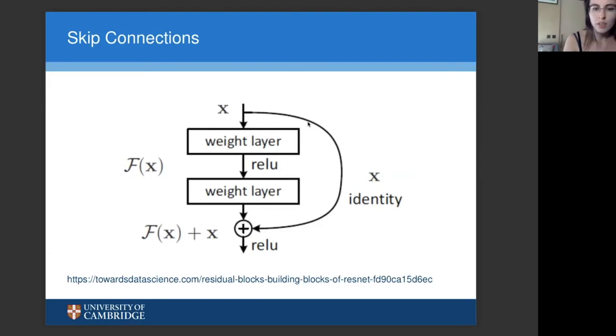But in addition, we also have this loop around the side where information coming in at x can decide to go through the network this way, or it can go directly around it as well. And then the output can see both the original x and also the F(x) that's come through this neural network here.